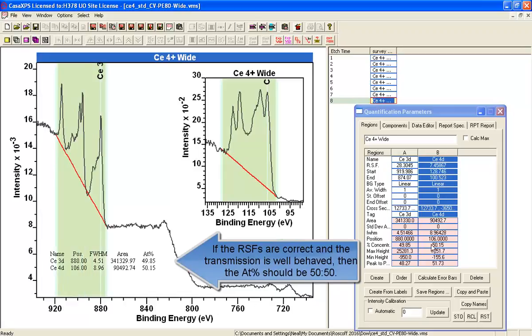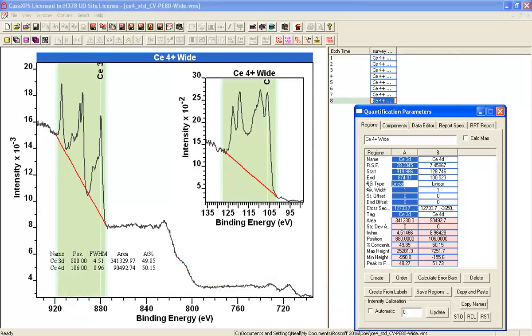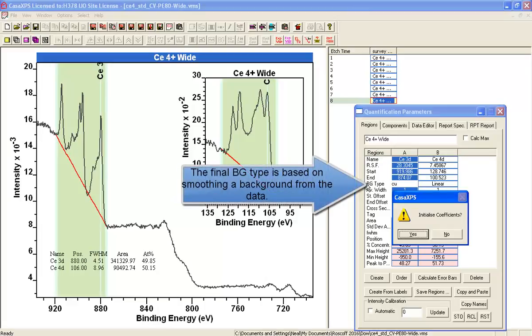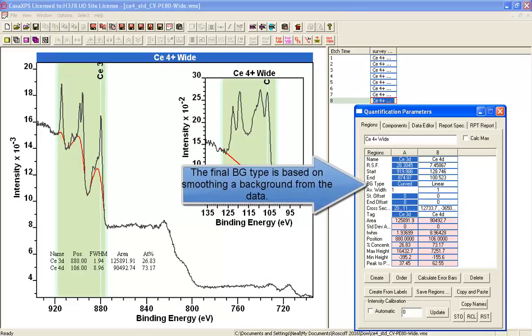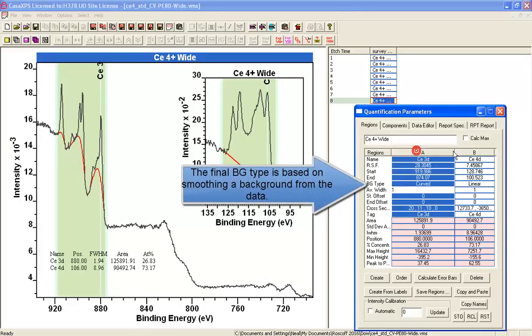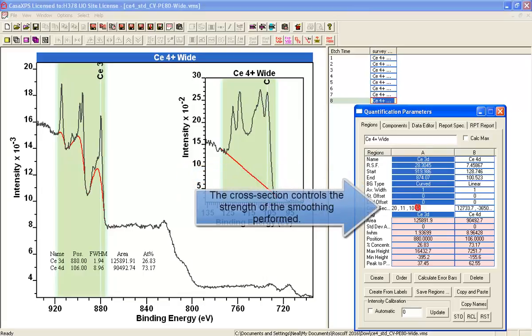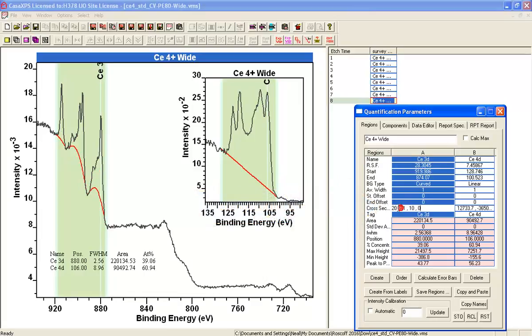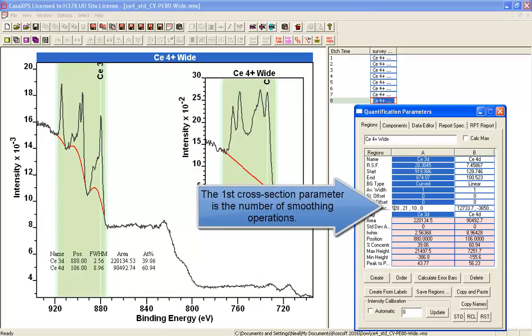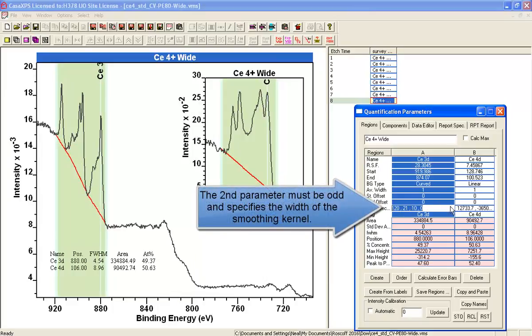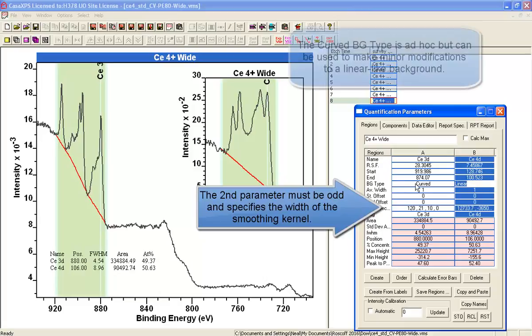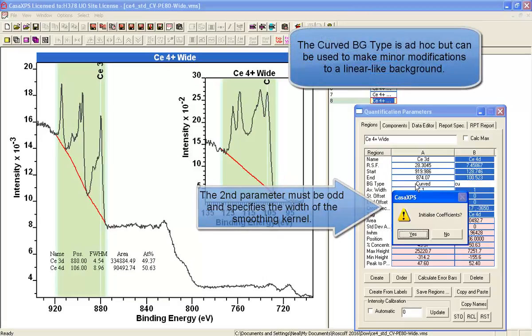And then finally, we'll introduce another background called a curved background. But this is really a background that is smoothed from the data, and the number of smoothing operations and the size of the kernel used in the smoothing determines how much shape there is in the background. What we can do is obtain something that looks more like an approximation to a linear background with a little bit more shape.